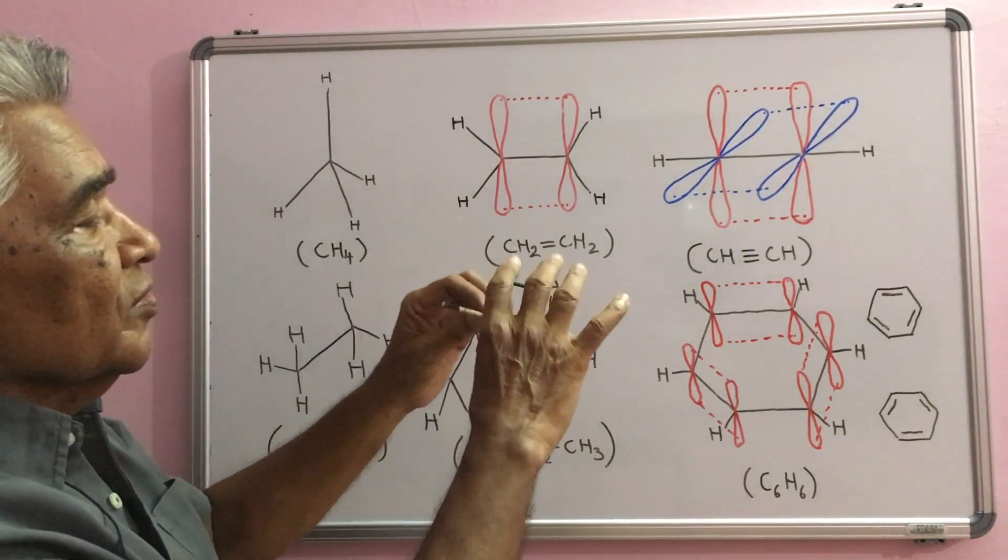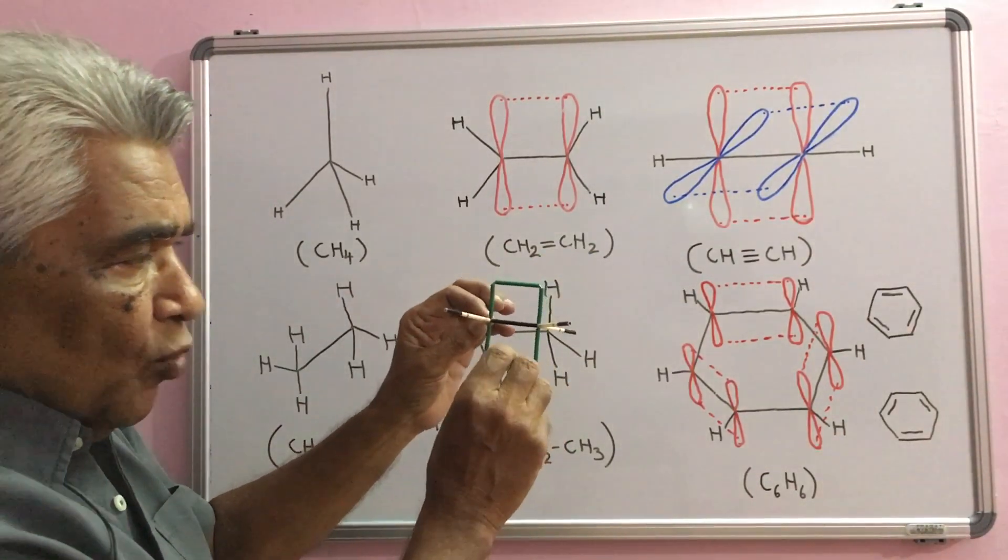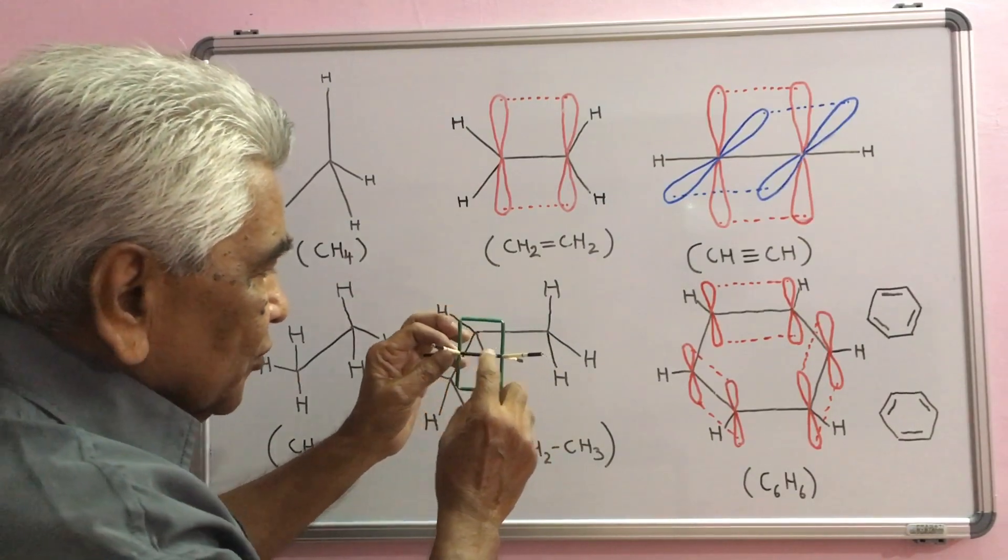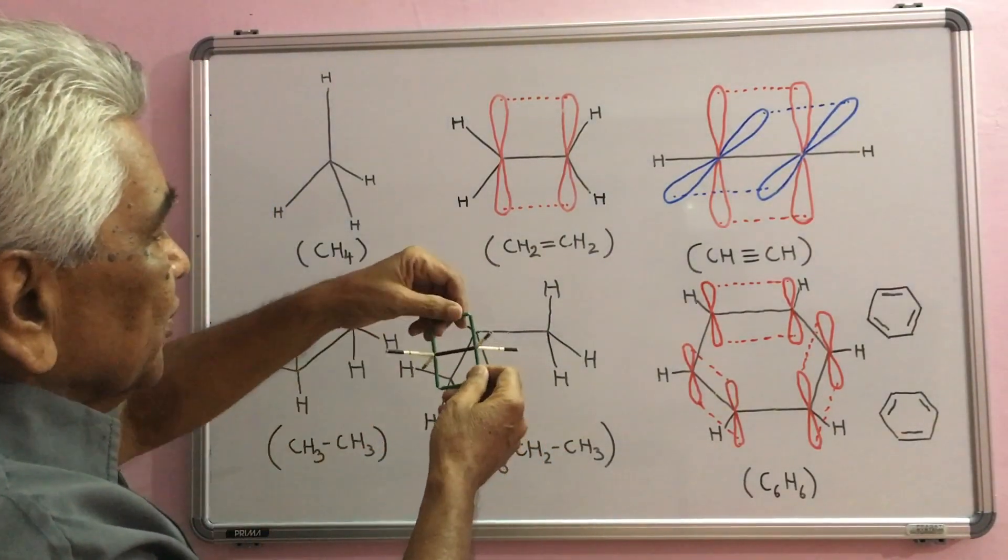These pi electrons are more reactive than sigma electrons because of the greater freedom of movement.